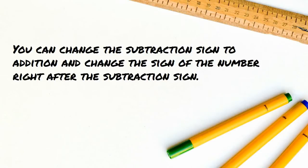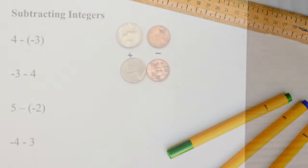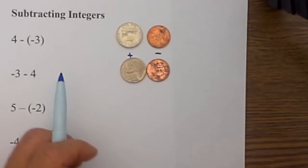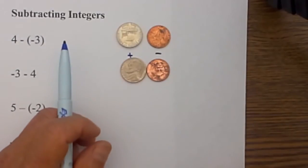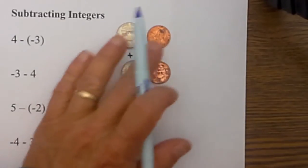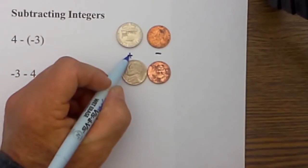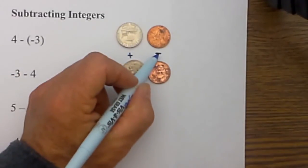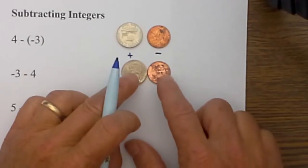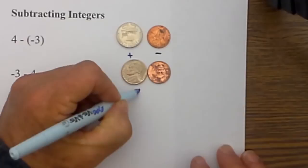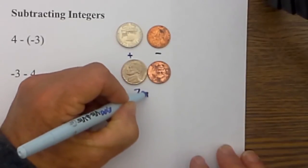Let's look at some example problems. In this video I would like to work on subtracting integers that are positive and negative. I will use counters — I'll use nickels and pennies. The nickel will be the positive number because five cents is more positive than one cent, and the penny is negative. Whenever you have a positive and negative together they cancel each other, and we will call that a zero pair.